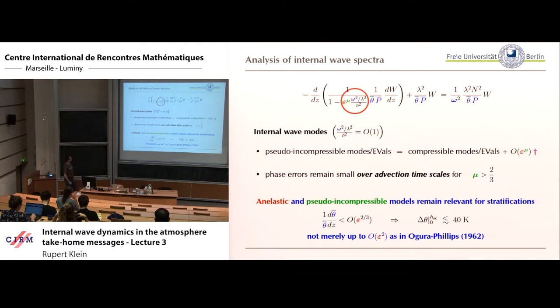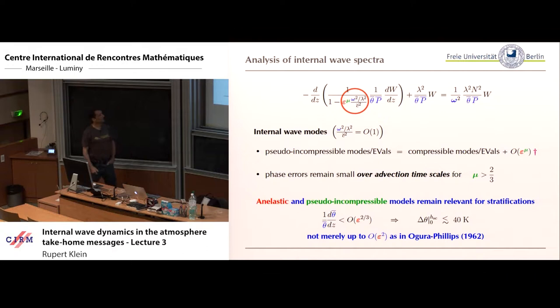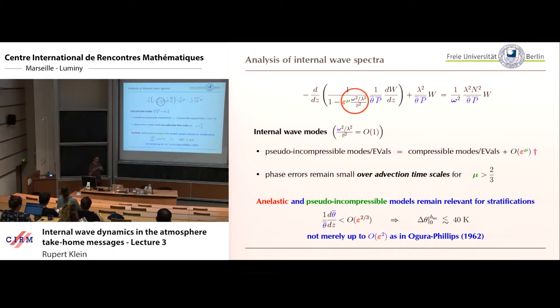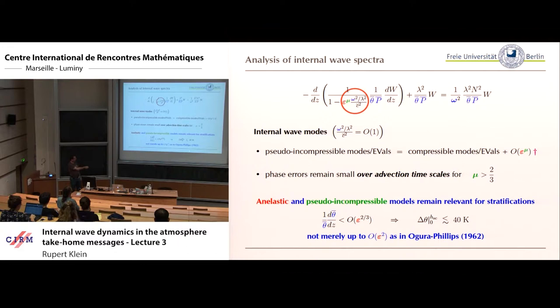We showed how one can say something about the internal wave modes comparing the reduced system without sound (anelastic or pseudo-incompressible) to the full system with sound. We can show that the internal wave eigenmodes of both systems stay close to each other if the stratification of entropy in the background—responsible for supporting the waves—has a certain weakness. The models' internal waves remain close over the slow, longest timescale if we have a stratification over the lower 12 kilometers of about 40 Kelvin, which is observed and realistic.